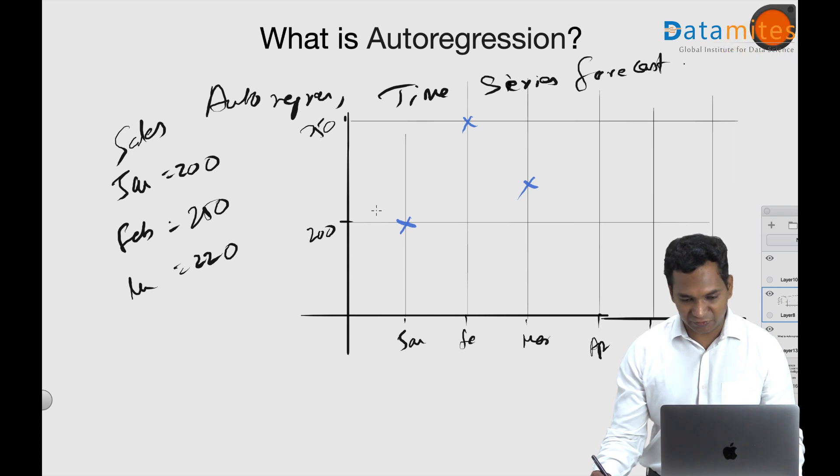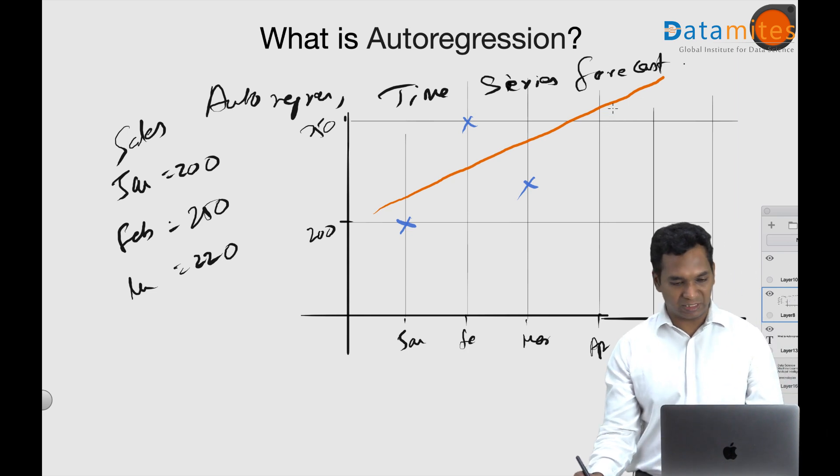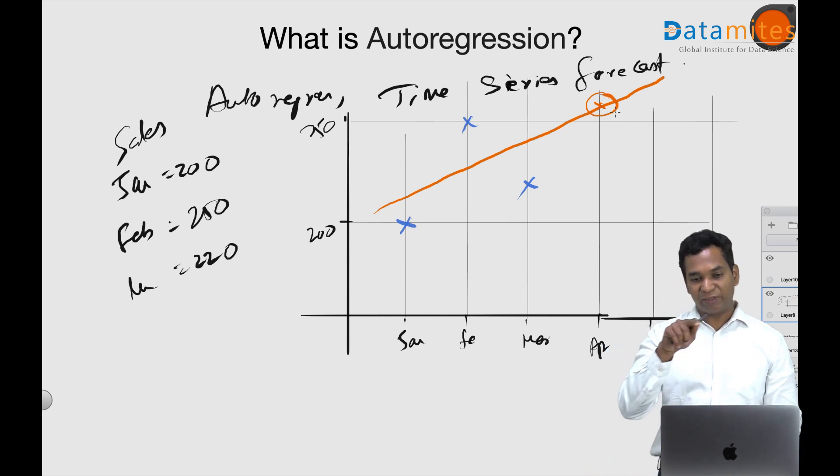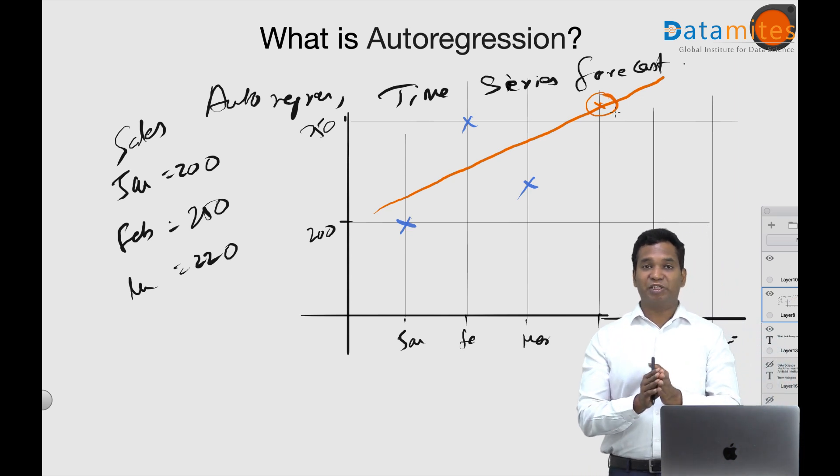So I can actually draw a predictive line which is fitting these three. And that might actually do as a value of let's say 260 or something, this one. And this is predicted by taking these three points, and this is actually called as autoregression.